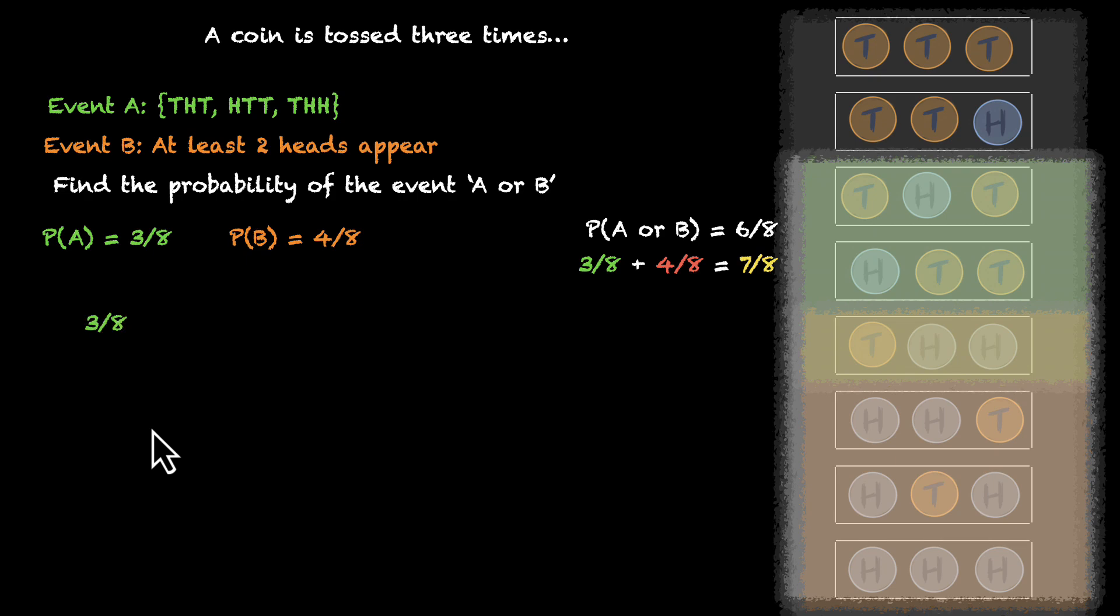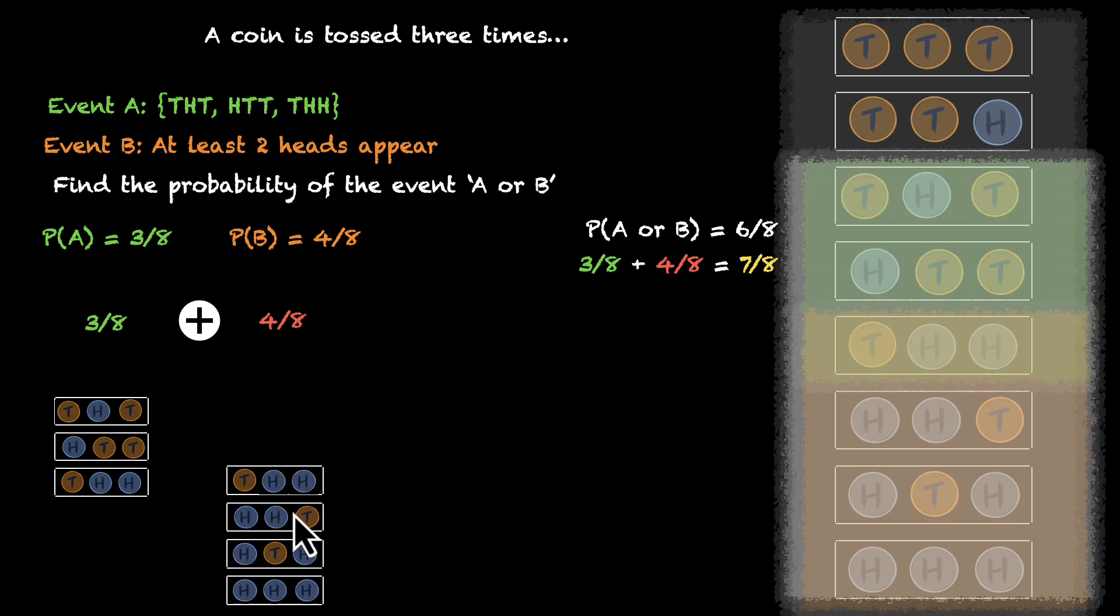We got this three by eight from these three sample points. And we got this four by eight from these four sample points. If we try to add them, what are we really doing? We're adding all of these sample points. Notice that we are also adding the overlap, which means this particular event, tail head head, is counted twice.